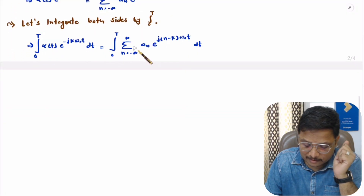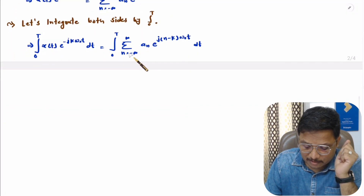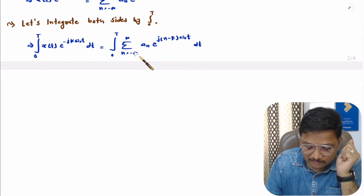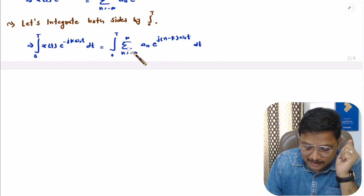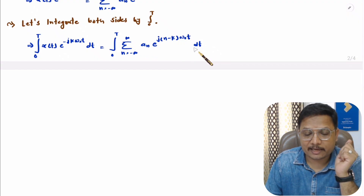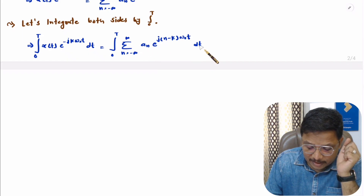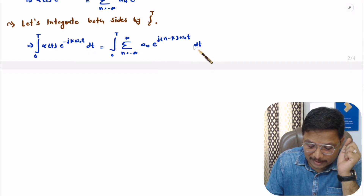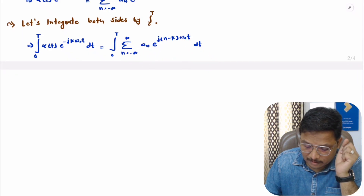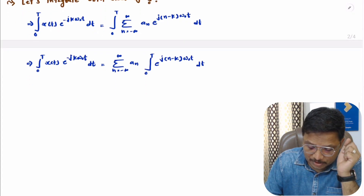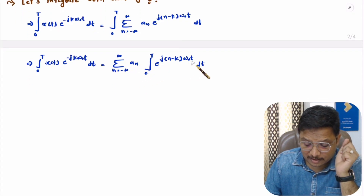Now if you observe this, here the summation where n ranges from minus infinite to infinite of a(n) is independent of time t. As it is independent of time t, you can take this summation outside of the integration.